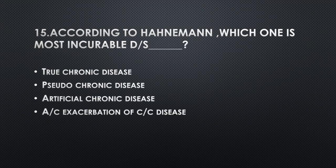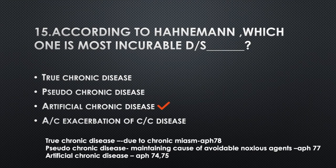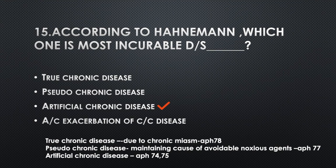According to Hahnemann, which one is the most incurable disease? Option A: True chronic disease, Option B: Pseudochronic disease, Option C: Artificial chronic disease, Option D: Acute exacerbation of chronic disease. Answer: Option C, Artificial chronic disease. True chronic disease: due to chronic miasm, explained in Aphorism 78. Pseudochronic disease: due to maintaining cause or avoidable noxious agent, Aphorism 77. Artificial chronic disease: Aphorisms 74 and 75.